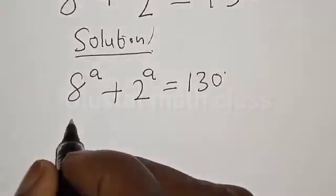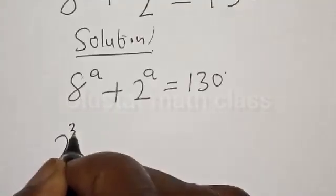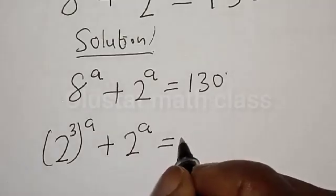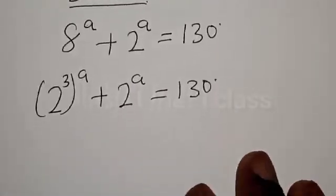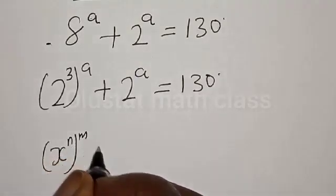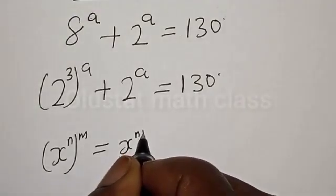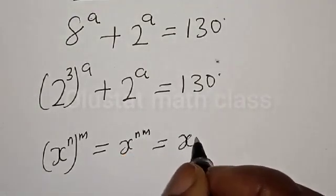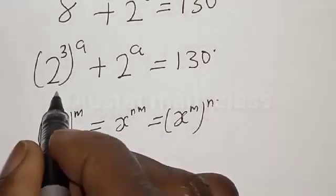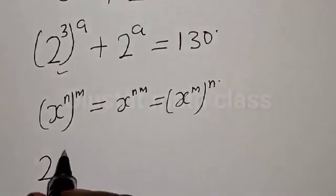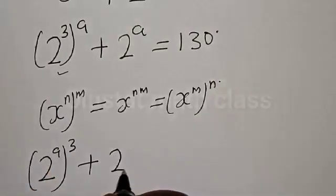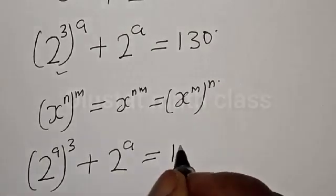8 raised to power a can be expressed as 2 raised to power 3, raised to power a, plus 2 raised to power a is equal to 130. Remember: if you have s raised to power n raised to power m, it is simply s raised to power n·m, which equals s raised to power m raised to power n. So this becomes 2 raised to power a, raised to power 3, plus 2 raised to power a is equal to 130.